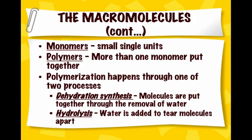In review: monomers are small, single units, while polymers are a bunch of monomers put together to form a very large molecule. Polymerization is the process that bonds these monomers together or tears them apart, and there are two types. Dehydration synthesis is when you're building a polymer — you remove a water molecule for every bond that you make. So if you have four monomers bonding together, you make three water molecules, one for every bond. Hydrolysis is the reverse: to get the monomers back, you put the water back in by breaking a bond and returning a water molecule.